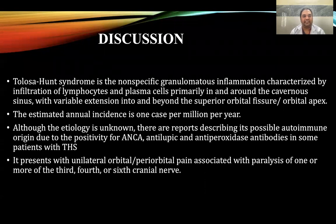Discussion: Tolosa-Hunt syndrome is a non-specific granulomatous inflammation characterized by the infiltration of lymphocytes and plasma cells, primarily in and around the cavernous sinus with variable extension into and beyond the superior orbital fissure or orbital apex. The estimated annual incidence is one case per million per year. Although the etiology is unknown, there are reports describing its possible autoimmune origins due to positivity for ANCA, anti-lipid and anti-peroxidase antibodies in some patients with Tolosa-Hunt syndrome.